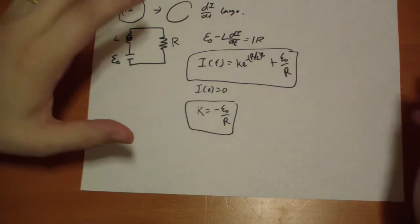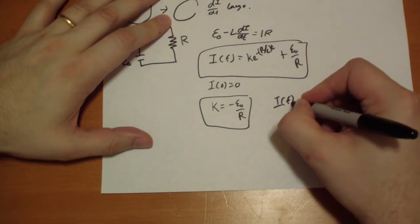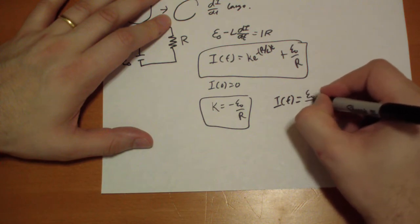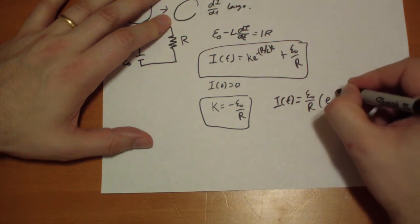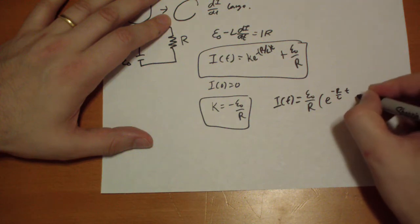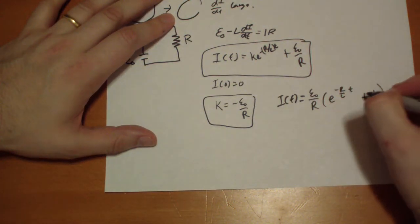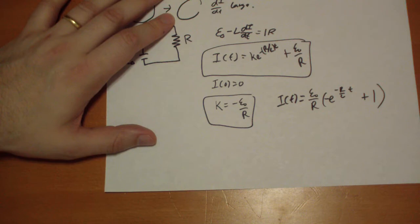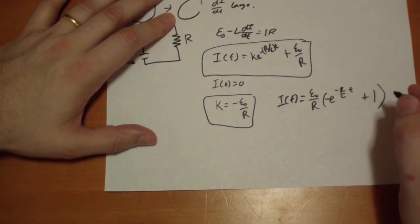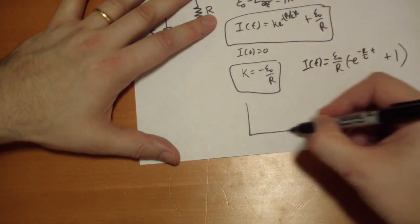And so the total looks like this. I of T is equal to epsilon-naught over R of E to the minus R over L T plus one. Okay? Did I do that wrong? I have a negative sign, but I should have a positive. E to the minus R to the L. This is K is minus, ah, this is negative. So I should probably switch it around. Anyway, the graph of this looks like this.